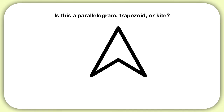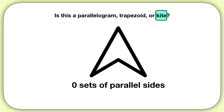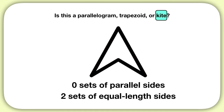Here's your last problem for this video. Is this a parallelogram, trapezoid, or kite? When you look at this shape, you see it has zero sets of parallel sides. But remember, before you can call it a kite, you have to ask one more question — you have to look at the side lengths. You can see on this shape that these two sides are the same length, and these two sides are the same length. So this shape has two sets of equal length sides. A shape with zero sets of parallel sides but two sets of equal length sides is called a kite.